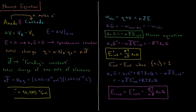Some other things we can look at based on this relationship: the standard reaction Gibbs energy, delta RG°, equals minus NF times E°cell. So we can define the standard EMF of the cell. That's also equal to minus RT times the natural log of the equilibrium constant. Rearranging these equations, the standard EMF of the cell equals RT divided by NF times the natural log of the equilibrium constant.